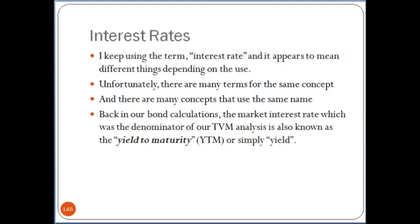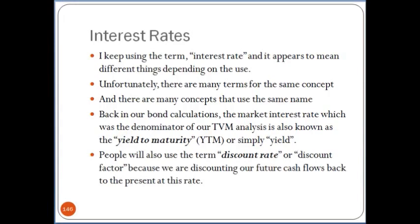In our bond calculations, the market interest rate — which was the denominator of our time value analysis — is also known as the yield to maturity, or simply the yield, if the bondholder holds the bond through the life of the bond. In our five-year example, we bought a bond and held it for the entire five years, collecting the payments until the bond's life ended. So the yield we got is known as the yield to maturity, and this is the discount rate in the denominator. People use the term discount rate or discount factor because we're discounting our future cash flows back to the present at this rate — straight from our time value of money discussion.